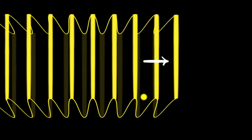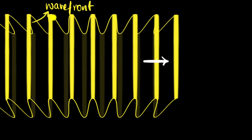Now you can see something you couldn't earlier: these lines represent sets of all crests and sets of all troughs. We give a name to these lines — we call them wavefronts. Wavefronts are sets of all points that are in phase with each other. In phase basically means that the electric field vectors are all oscillating in sync; they will all finish the same number of oscillations at any given time. Importantly, the direction in which the wave travels will always be perpendicular to the wavefront.